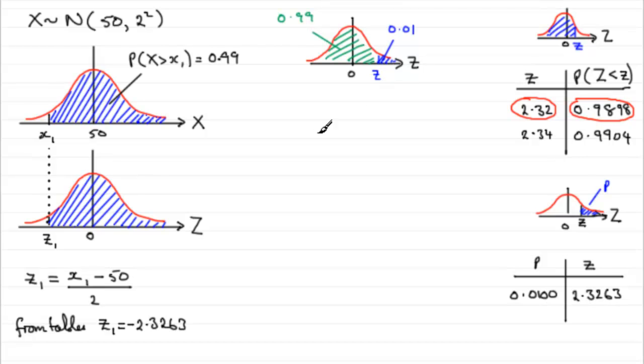But again, by symmetry, I wanted this value to the left of 0. So, instead of it being 2.32 above 0, it's going to be minus 2.32 below 0. So, from tables, z1 either equals this value, or, if you were using these tables, minus 2.32. So, it's up to you which one you use. Examiners tend to allow a little bit of leeway between using these values. But now, we can just substitute this into here.